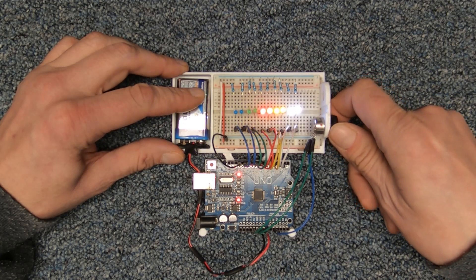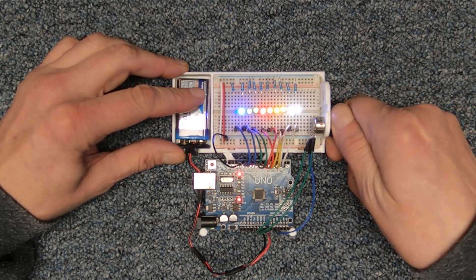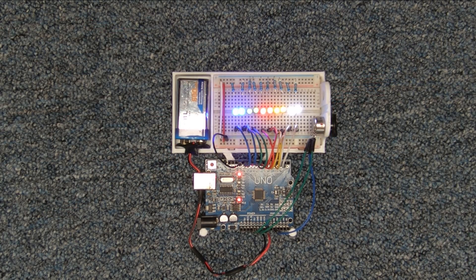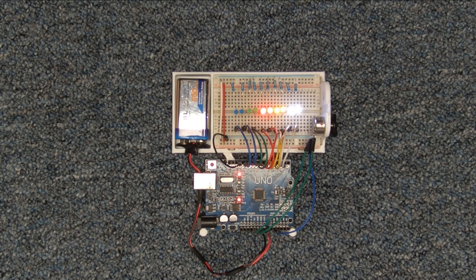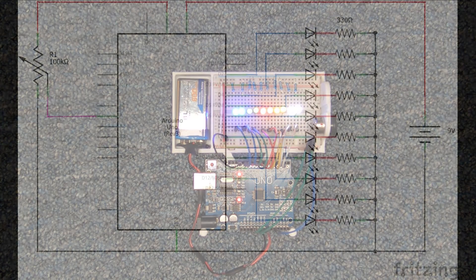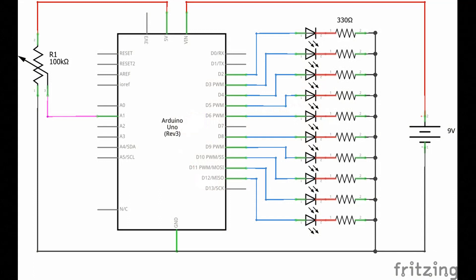In the Arduino sketch, we will be using an array to first define all the pin modes for the LEDs and then use the same array to scroll the LEDs on and off. Also, to make this tutorial more fun and interesting, I added a potentiometer to control the scrolling speed of the LEDs. If you would like to build the circuit and try this out yourself, just look in the description below and you'll find a link to this project's webpage where you will find the schematic diagram and also a copy of the Arduino sketch.